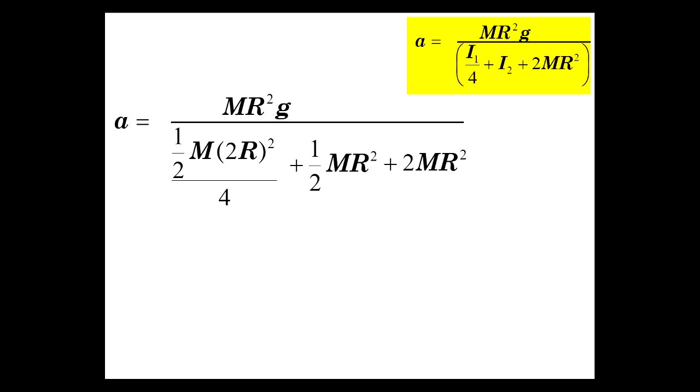Okay. So here's our latest result right up here. And let's expand the moments of inertia. So we have acceleration is M R squared G over 1 half M 2 R squared over 4 as indicated here, plus I2, which is 1 half M R squared, plus 2 M R squared. Now watch what happens now.